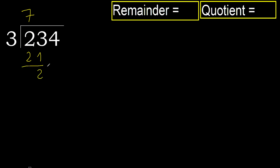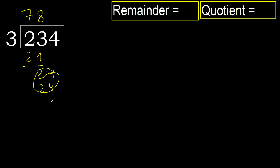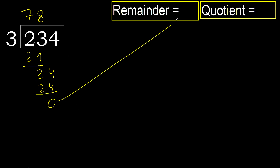Subtract next. 3 multiplied by 8 is 24. Is not greater. Subtract 0. Next — that is not a number, therefore finish it.